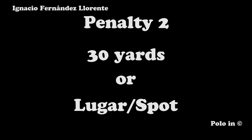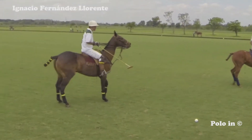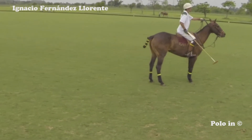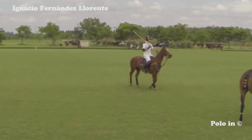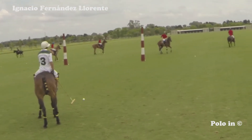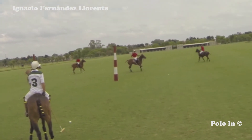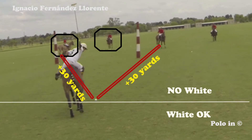Penalty number two can be taken from the place where the foul was committed, or at the 30-yard mark. Here are some cases in which you choose to take it on the foul spot. Attacking players stay behind the ball, defending players at least 30 yards away from the ball, and not behind the goalposts. Here, we see two red players behind the goal. If white does not score, it will be shot again.